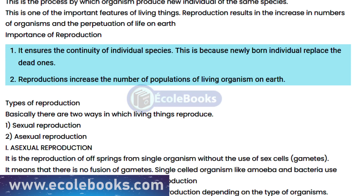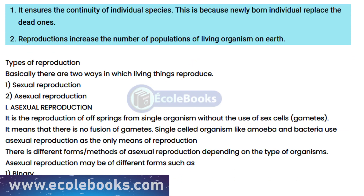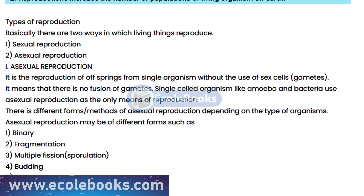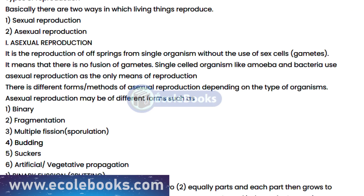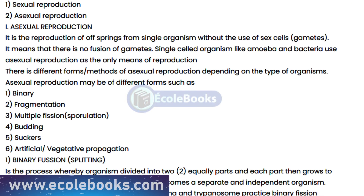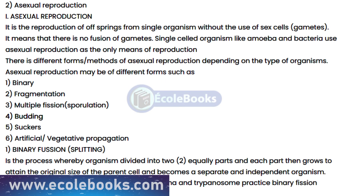Asexual reproduction results in offspring that are genetically identical to the parent. On the other hand, sexual reproduction results in offspring that are genetically different from the parent.